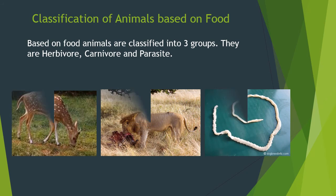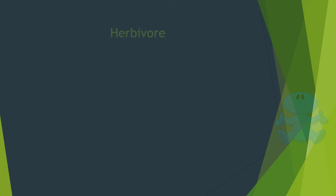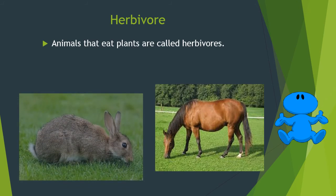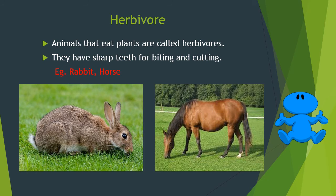Based on their food, animals are classified into three groups: herbivore, carnivore, and parasite. Herbivores are animals that eat plants. They have sharp teeth for biting and cutting. For example: rabbit, horse.